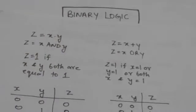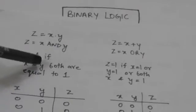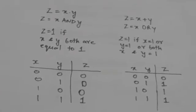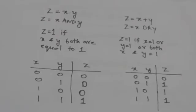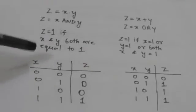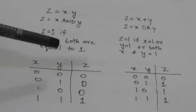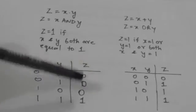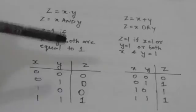Now z equals to x AND y. The value of z will be 1 if both x and y are equal to 1. We can also define these logical operations using a truth table. A truth table is a table which gives the value of a boolean function for all possible values of the binary variables involved in that function. This table for the AND logical operation gives the value of z, which is x AND y, for all possible values of x and y.